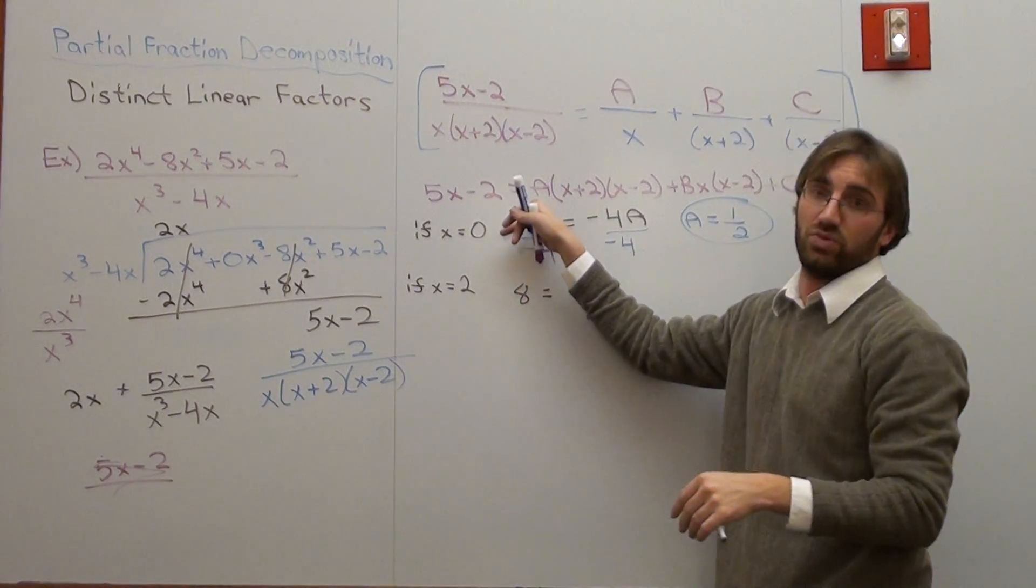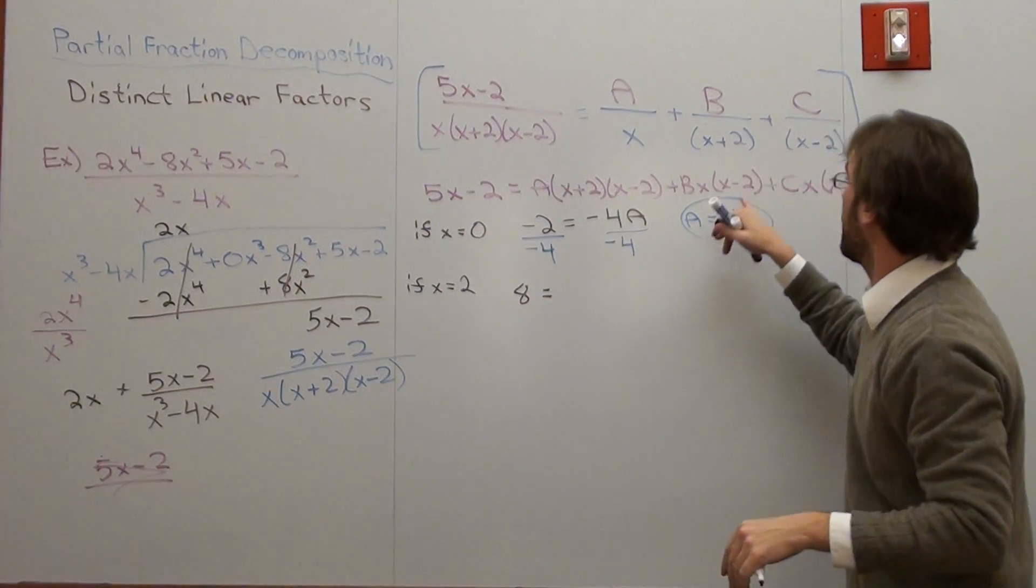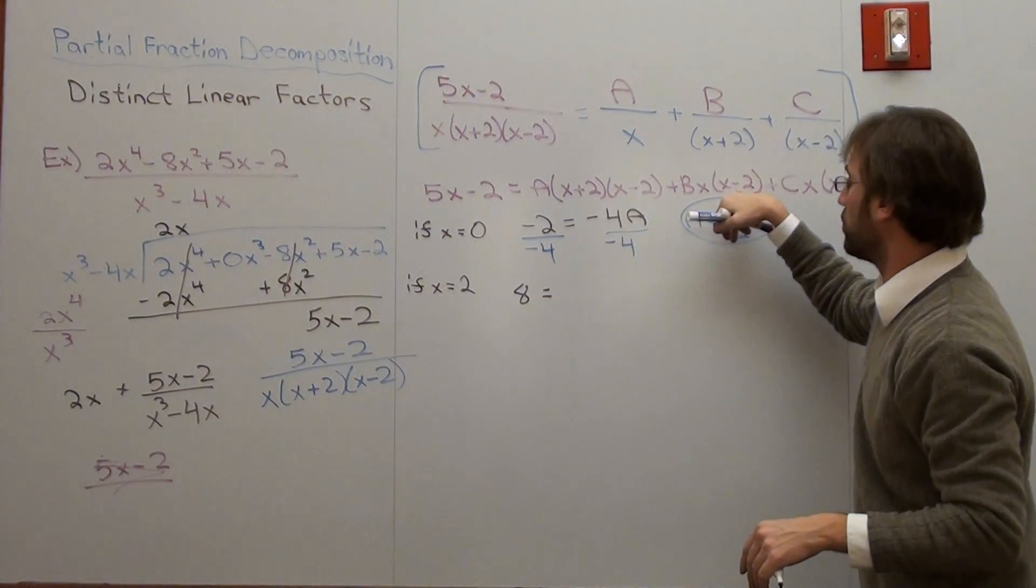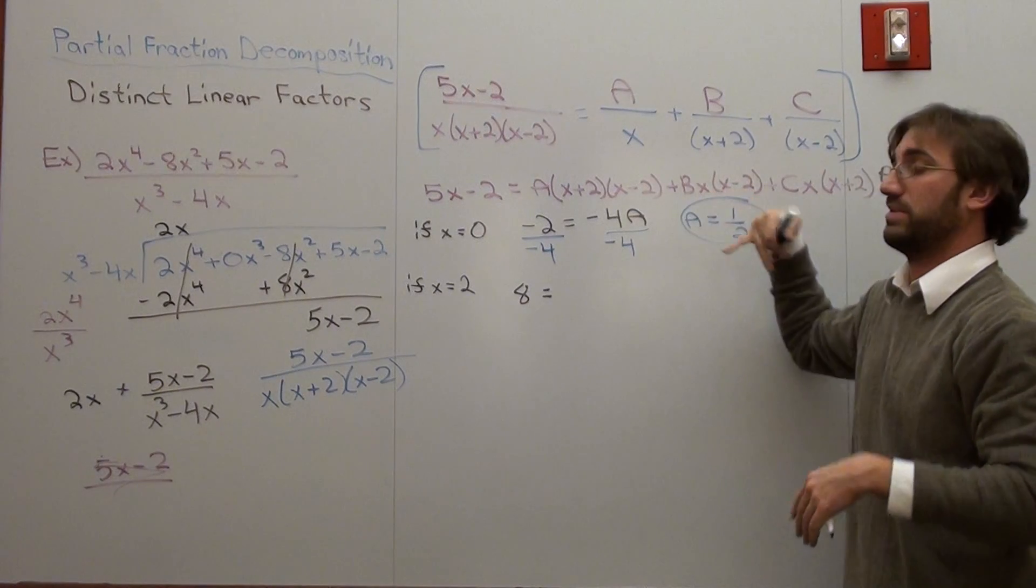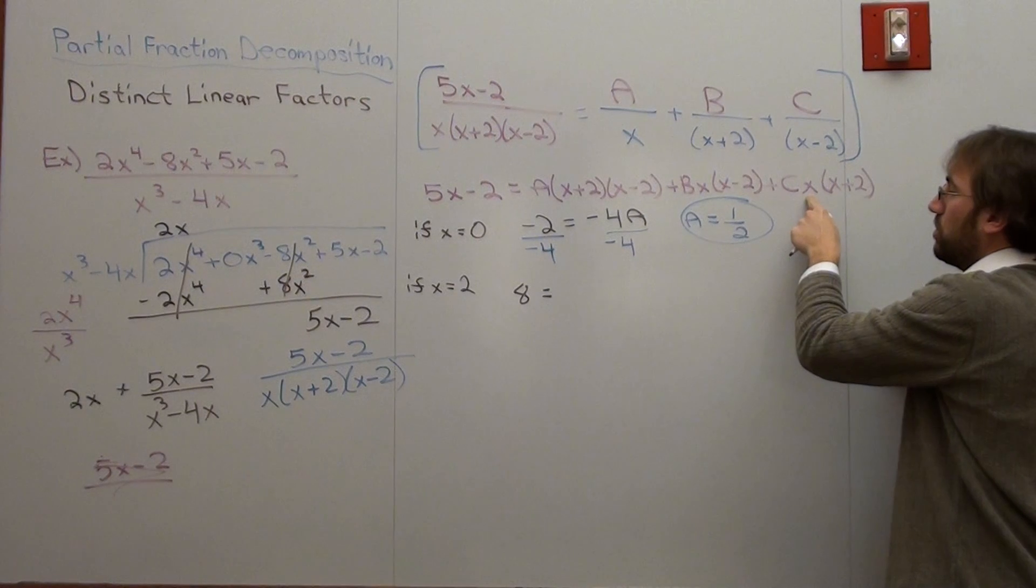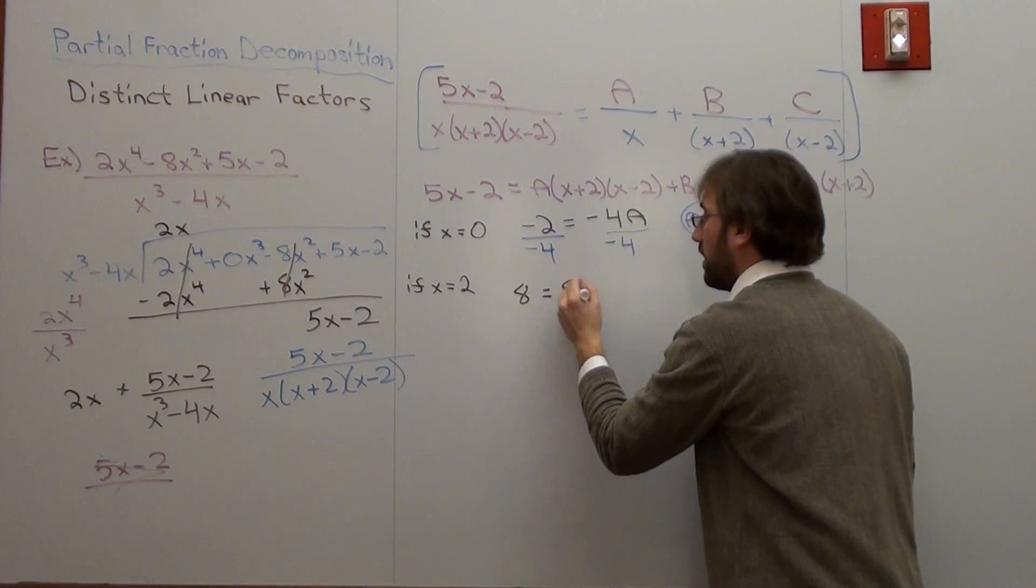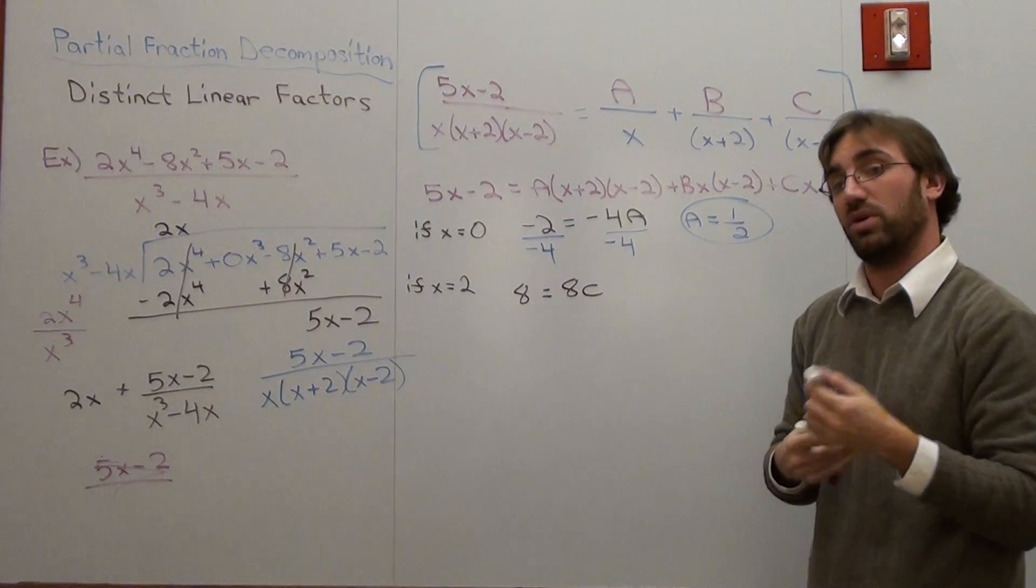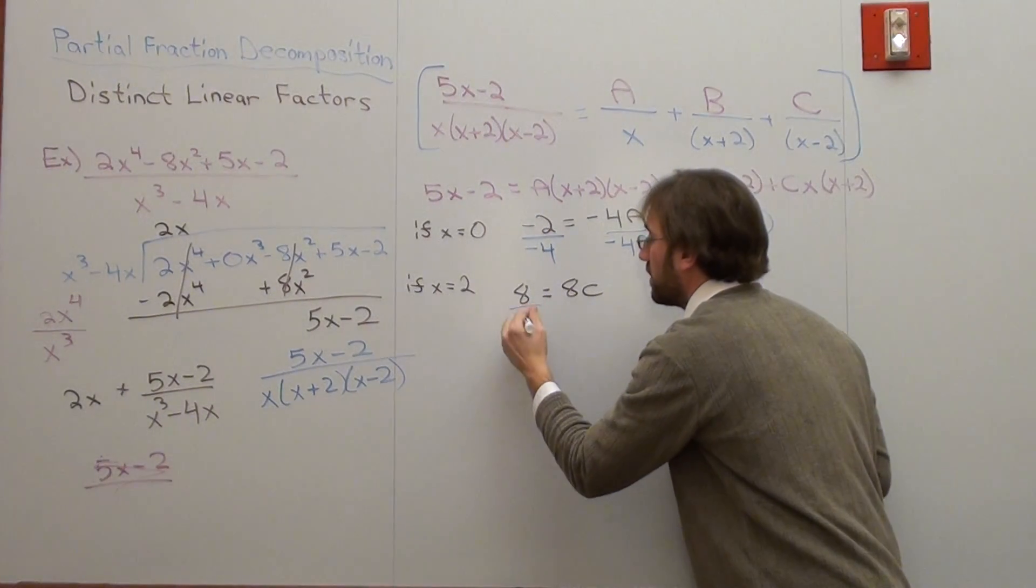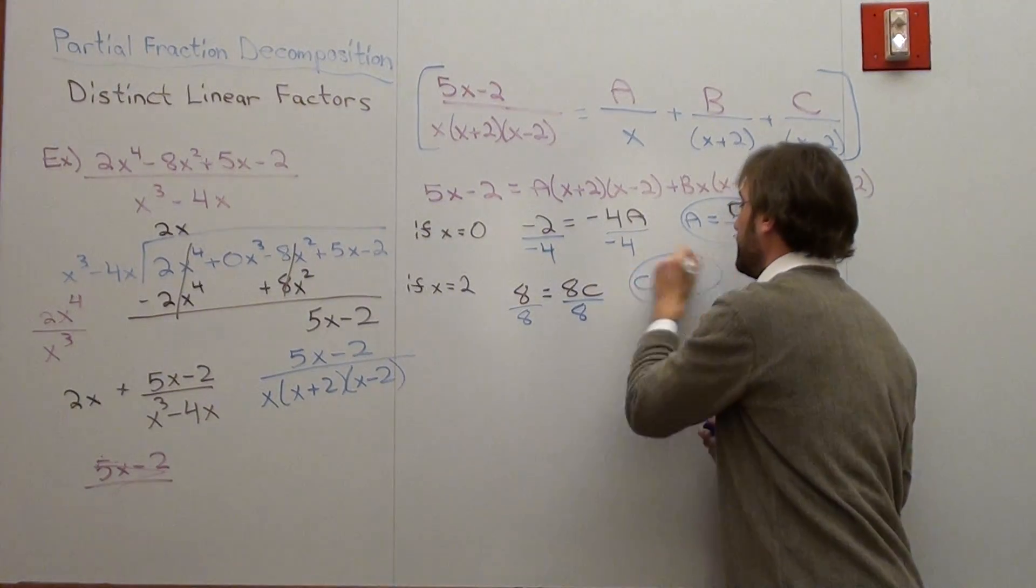If I plug in 2 here or substitute in 2, that makes it a 0. I don't even have to worry about anything. I don't care if A is 1 half, because everything is going to be 0. If x is 2 here, well, that's going to be 0. If x is 2 here, that's going to be 4, and that's going to be a 2, so it's going to be 4 times 2, which is 8C. When I divide both sides by 8, C equals 1.